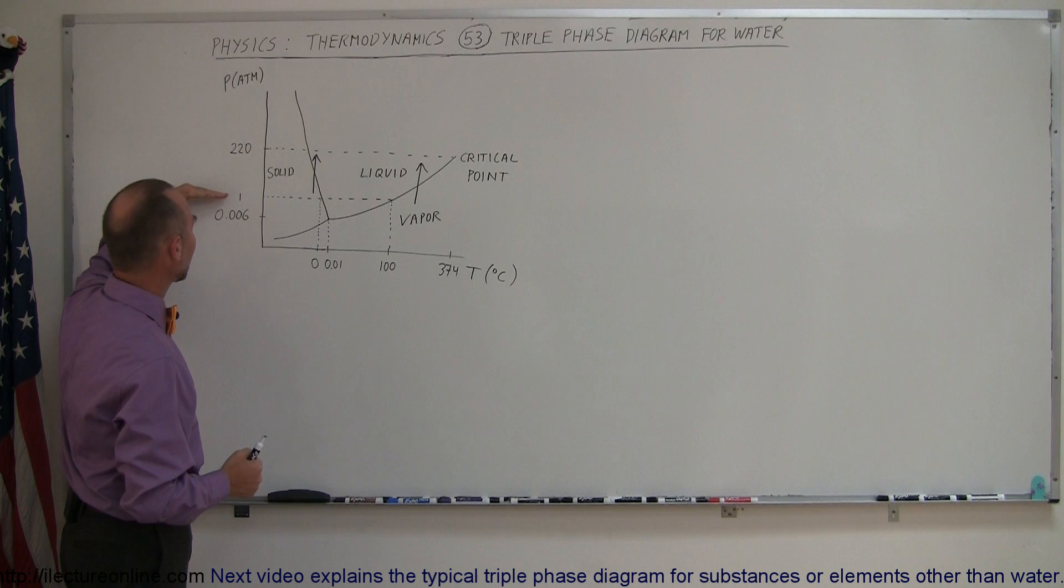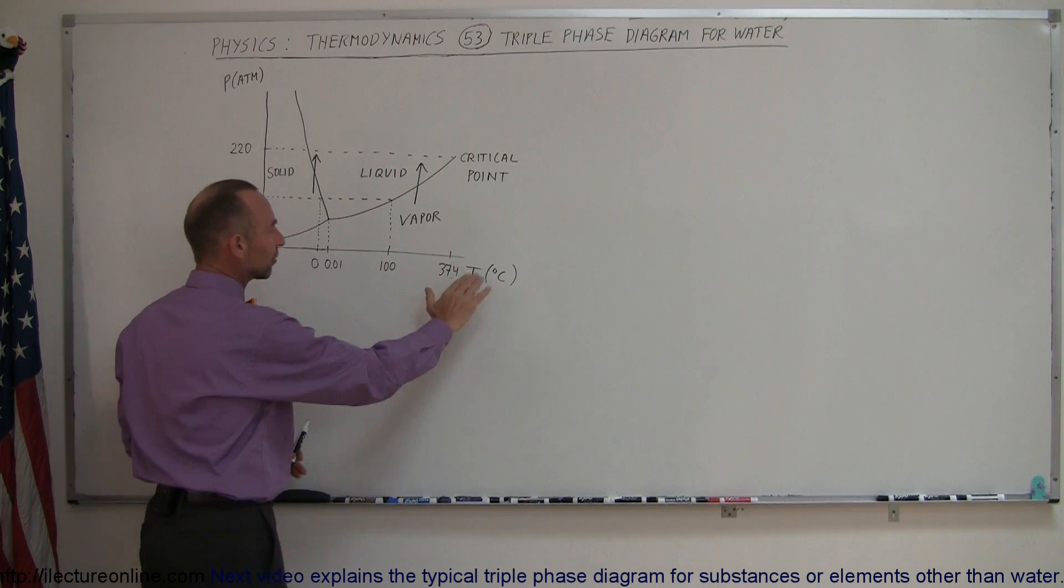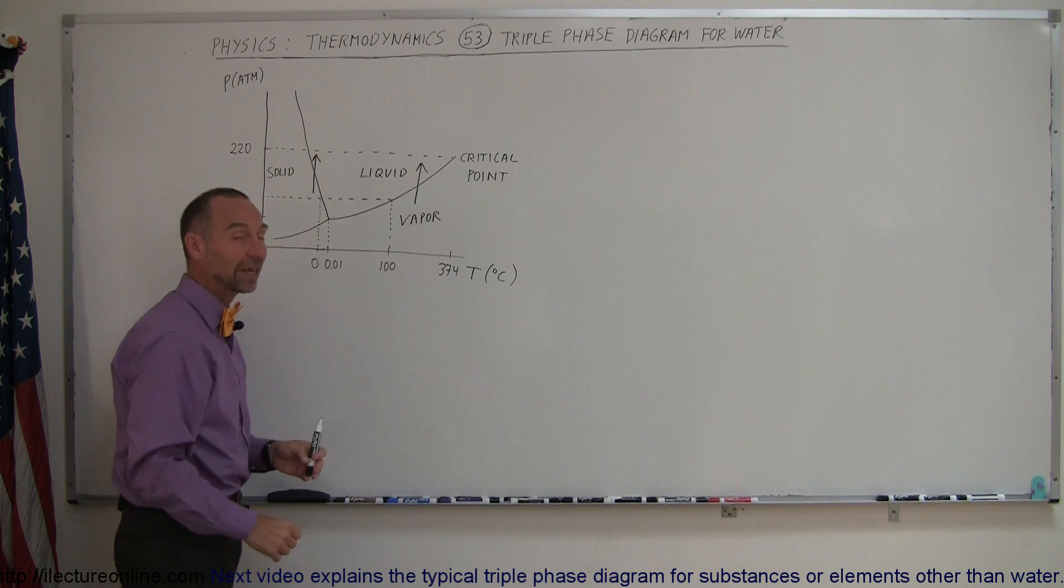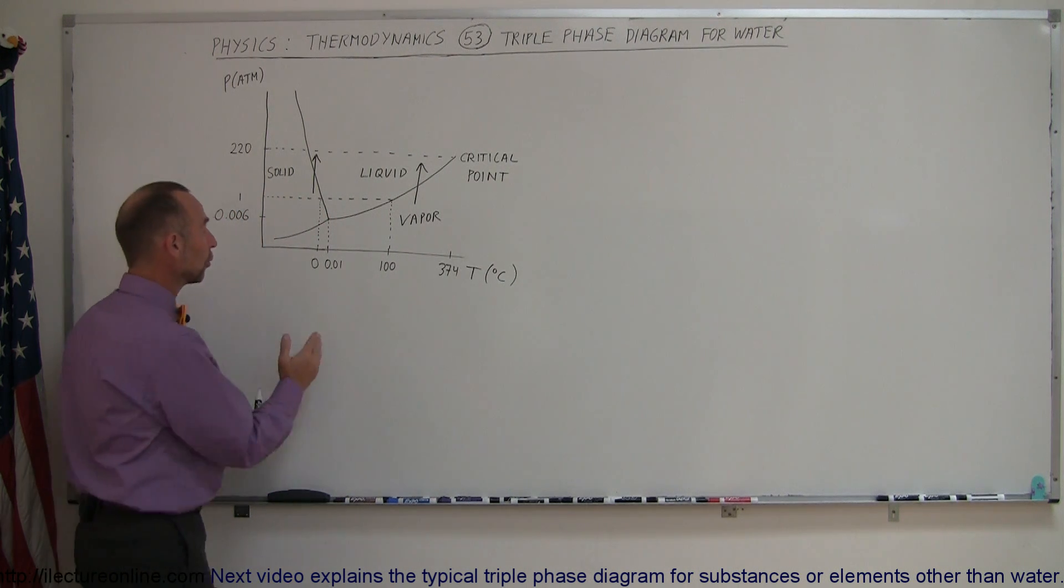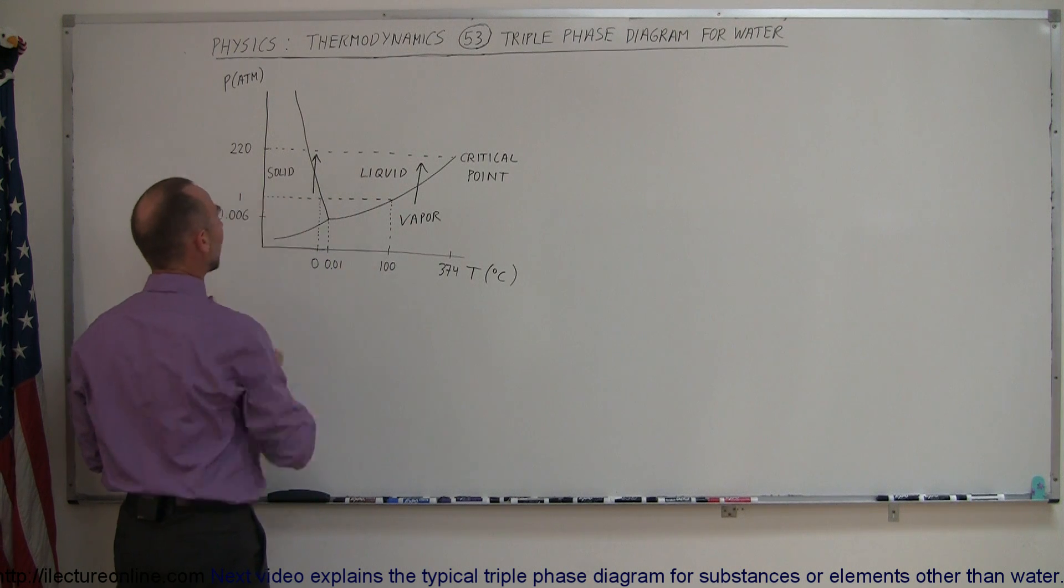we have pressure in atmospheres. Notice that one atmosphere, atmospheric pressure, is this line right here. And on the horizontal axis, we have the temperature scale in centigrade degrees. Notice the freezing point of water and the boiling point of water at one atmosphere.